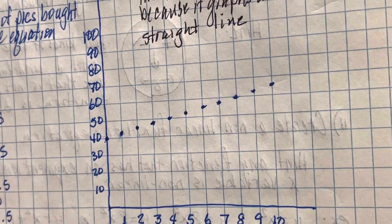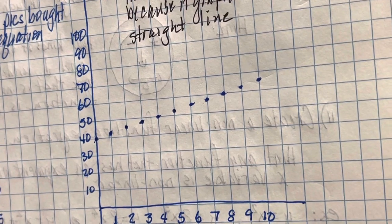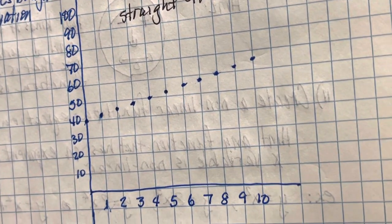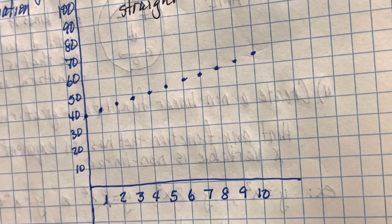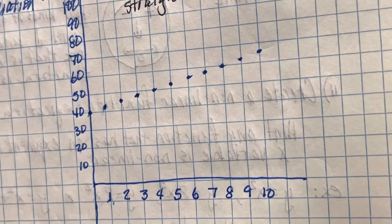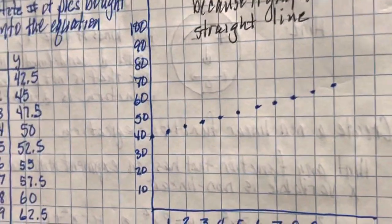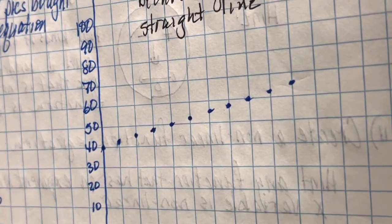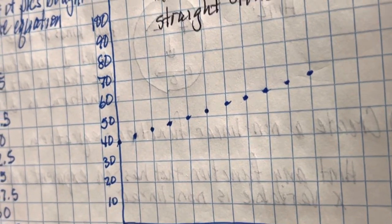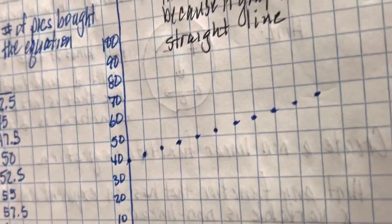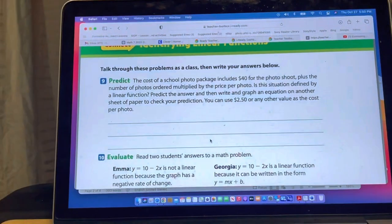That graphs as a straight line. We don't connect the dots, because you can't buy two and a half pictures or four and a half pictures — you can only buy whole numbers. Since we can't connect the dots, the dots remain independent of each other.